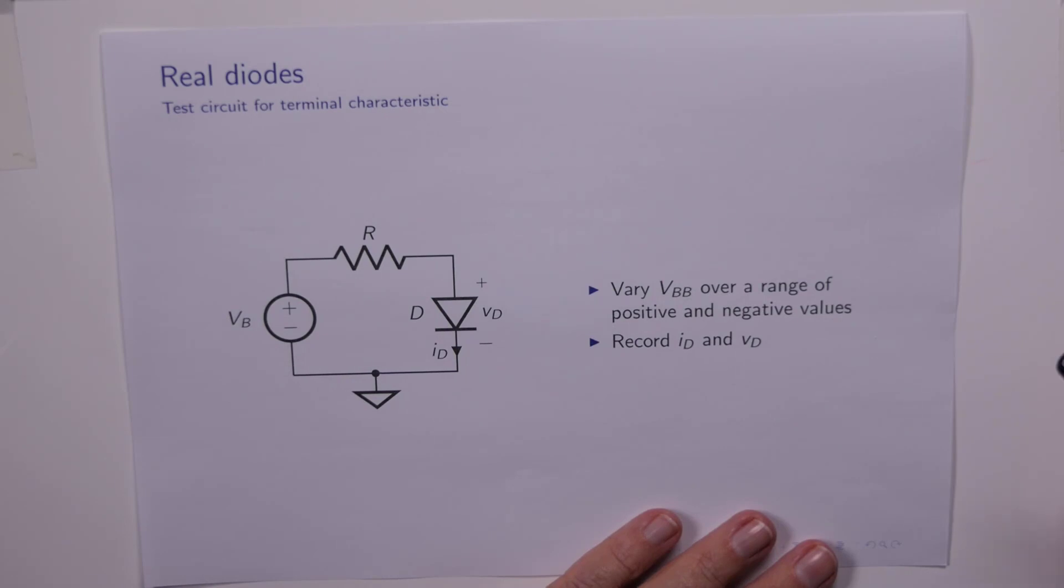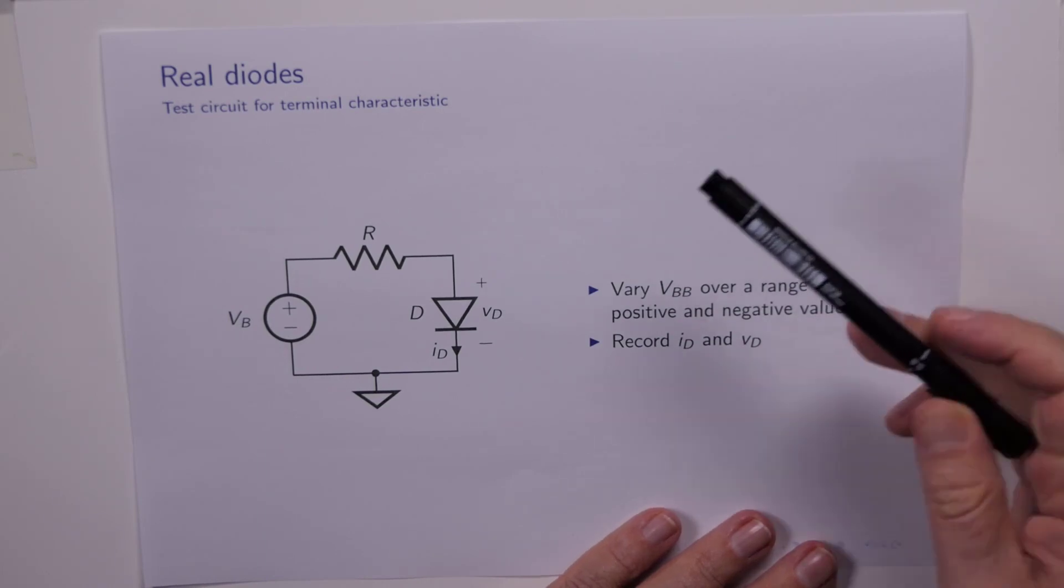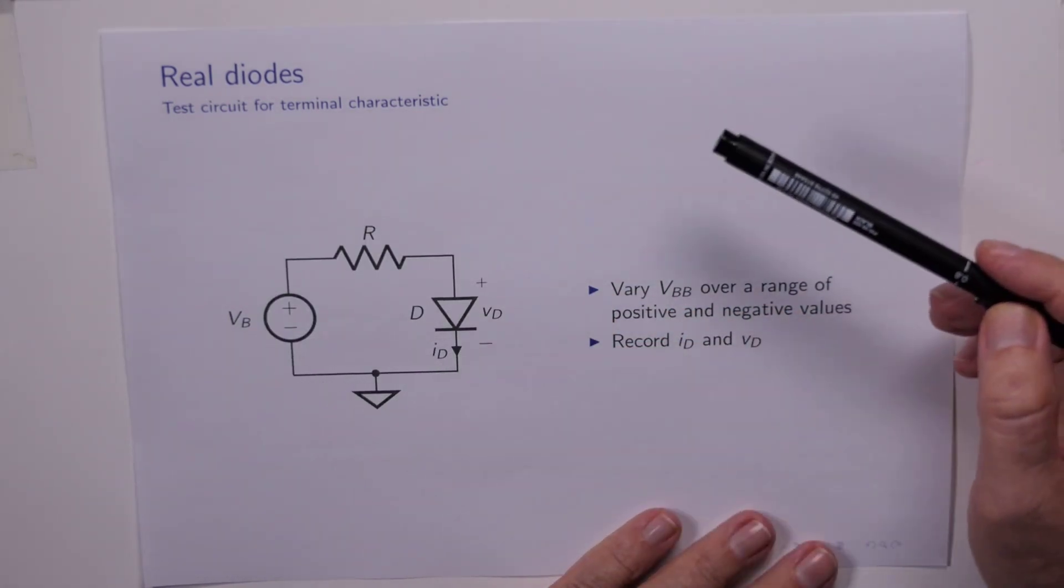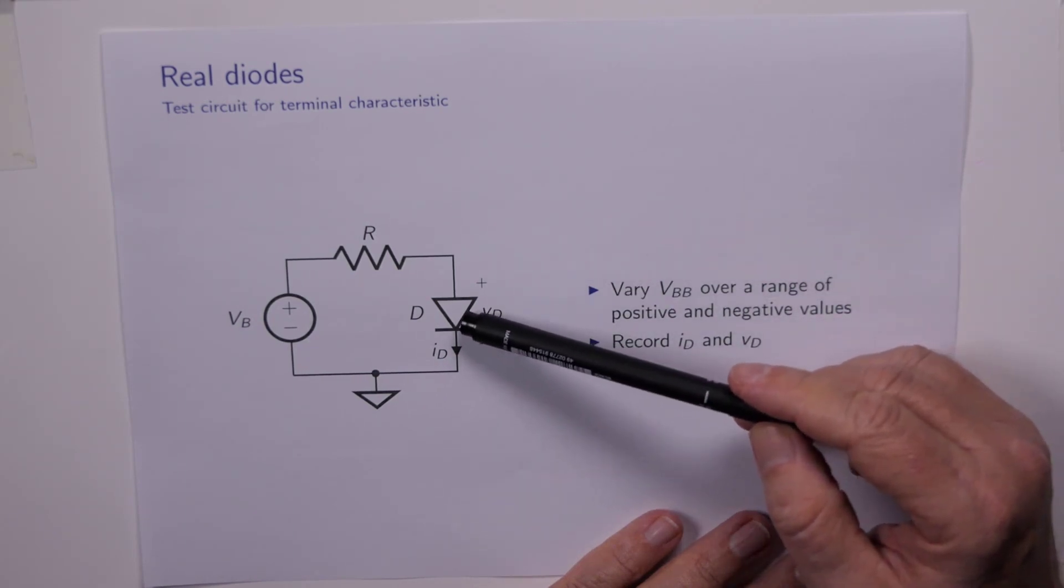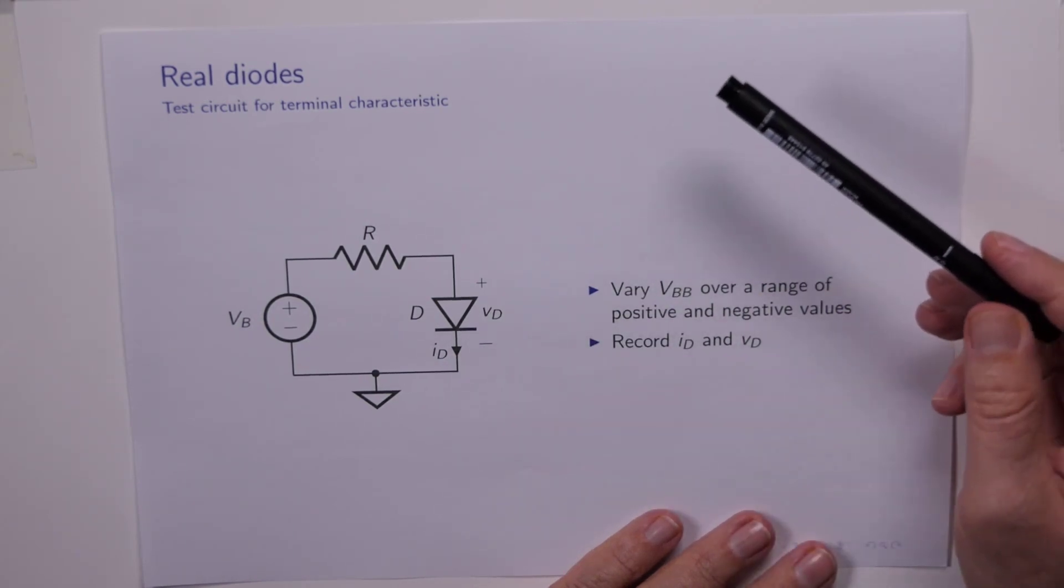Let's now turn our attention to real diodes. Following the lead from ideal diodes, we've got our test circuit in which we want to explore the behavior and characteristics of this diode D, which is now a real diode.